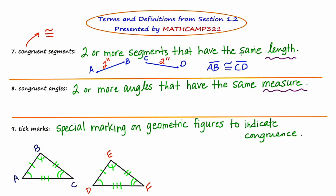Now I'm going to give an illustration for congruent angles — two or more angles that have the same measure. Suppose you stumbled upon two angles: angle M is 125 degrees and angle N is also 125 degrees. Because these two angles have the same measure, we can say that they're congruent. We would say angle M is congruent to angle N. When you write this, don't forget your angle symbols.